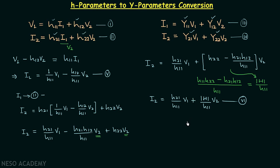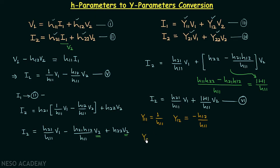Comparing equation 5 with equation 3, we identify: y11 = 1/h11 and y12 = −h12/h11. Comparing equation 6 with equation 4, we identify: y21 = h21/h11 and y22 = det[h]/h11. In this way we have performed the complete conversion of h parameters to y parameters.